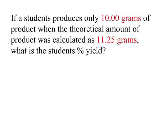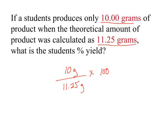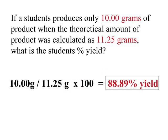As an example: a student produces only 10 grams of product when the theoretical amount was calculated to be 11.25 grams. What is the student's percent yield? The student produced 10 grams and theoretically should have produced 11.25 grams. So the percent yield is 10 divided by 11.25, giving a percent yield of about 89%.